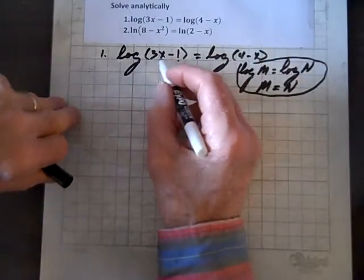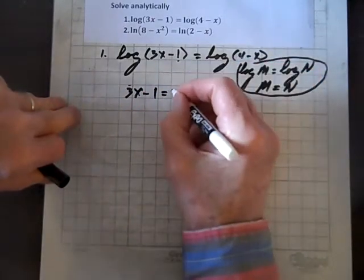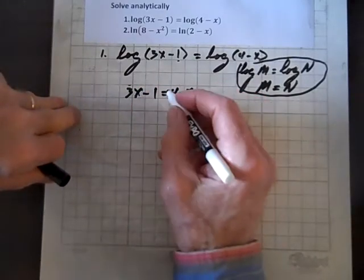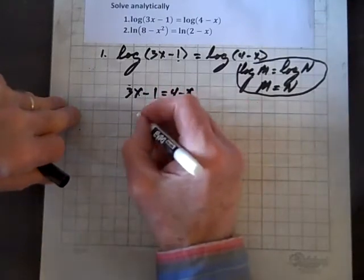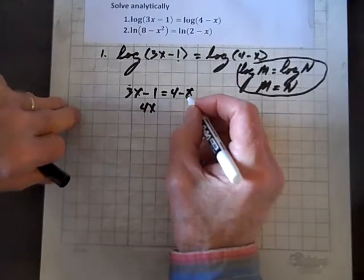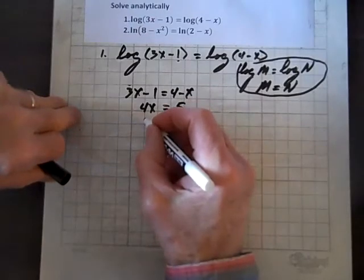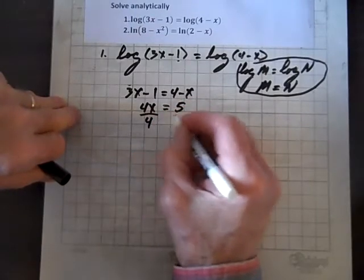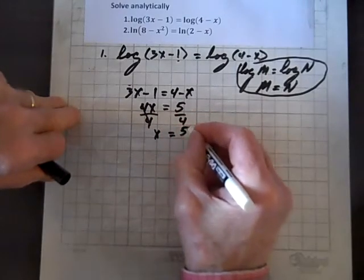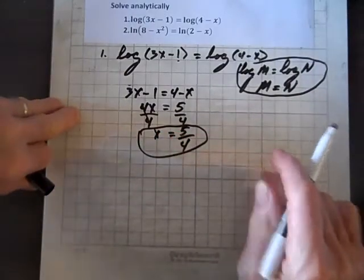Anyhow, so now we can equate 3x minus 1 to 4 minus x. Now let's get all the x's on the left, everything else on the right. So I'll add x to both sides and I get 4x, and I'll add 1 to both sides, 1 plus 4 is 5, and now we'll divide both sides by 4, and we get x equals 5 over 4. And we've taken care of the first one.